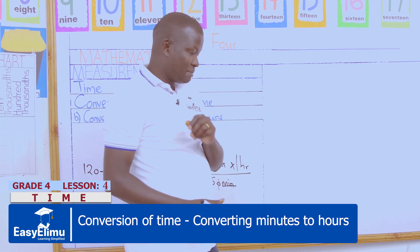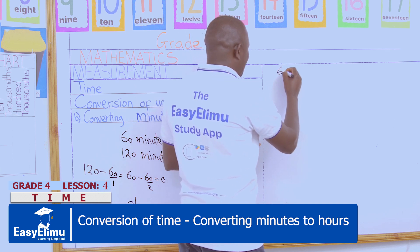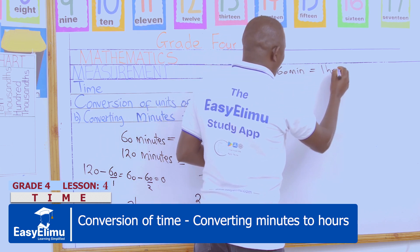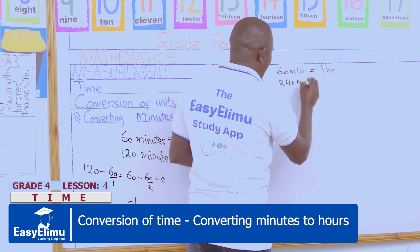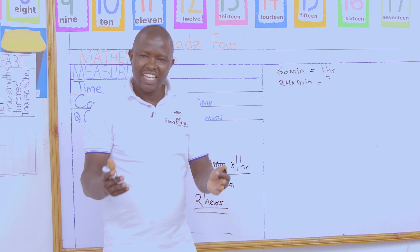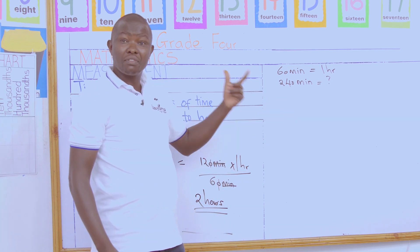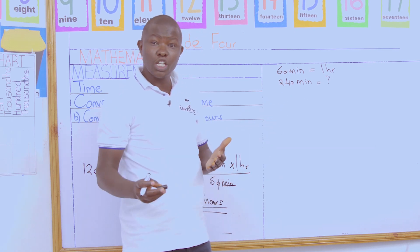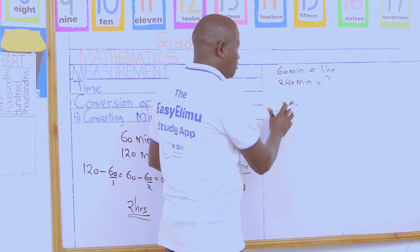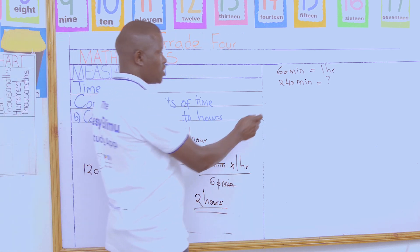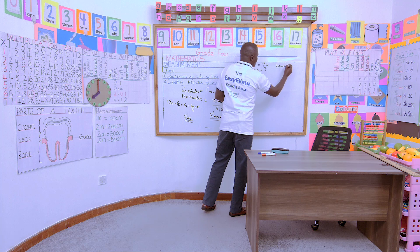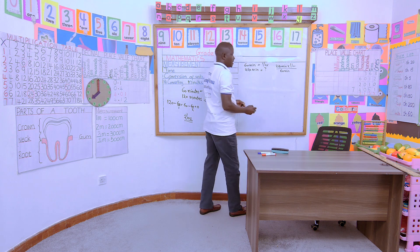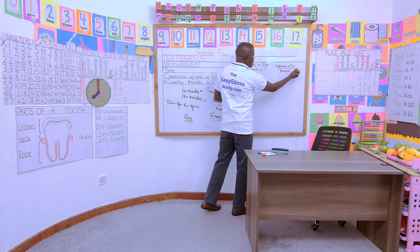Now, if 60 minutes are equivalent to one hour, what about 240 minutes — how many hours is that? We cross multiply: 240 multiplied by 1 hour, divided by 60 minutes. Minutes divide by minutes, we remain with hours. Cancel the zeros: we have 24 divided by 6.